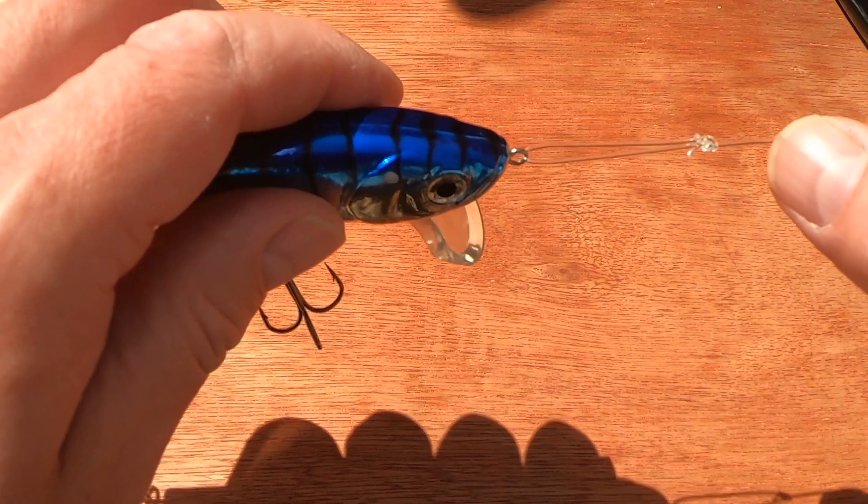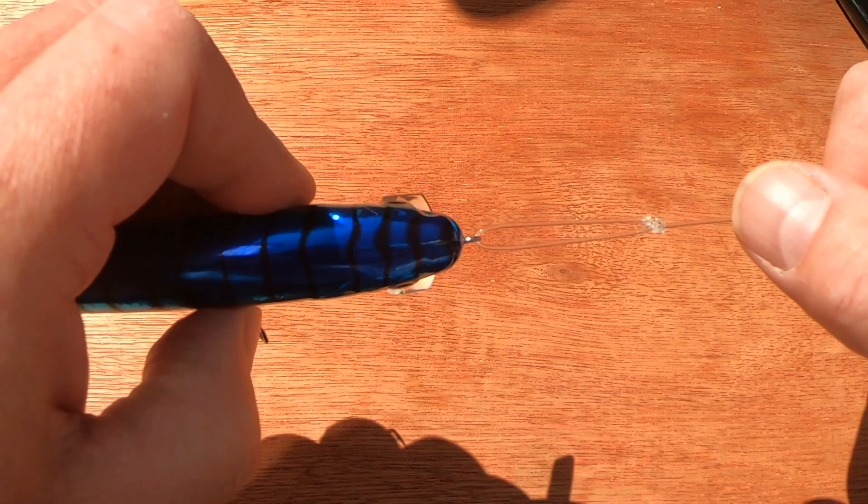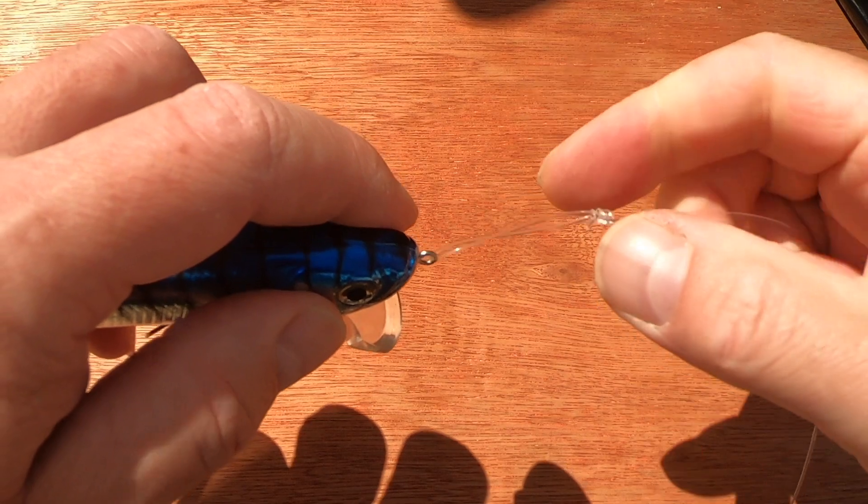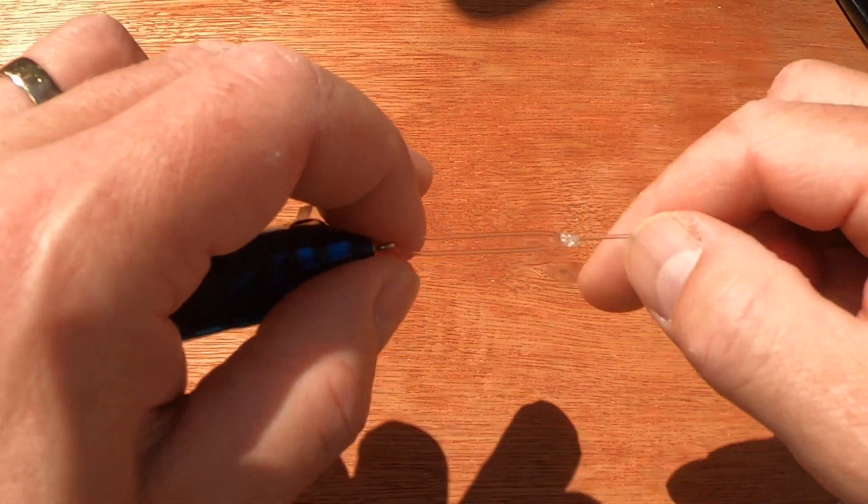So you have more movement for the lure, particularly when you're trying to walk the dog when you're surface fishing, or even just winding a normal lure. And you've given your lure a little bit more movement than you get in a clip. You do get some movement in a clip, but this is a fixed loop knot.